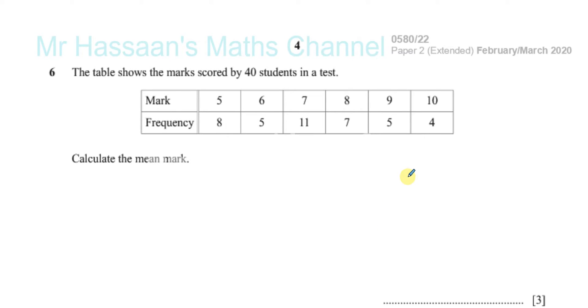Okay, welcome back. Number six now from paper two of the February-March 2020 International GCSE Cambridge paper. The table shows the mark scored by 40 students in the test. Calculate the mean mark.